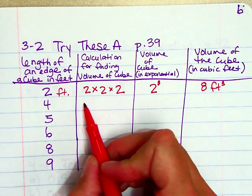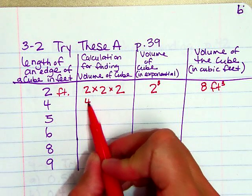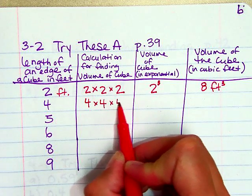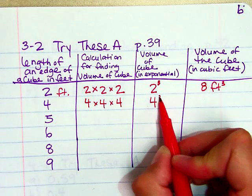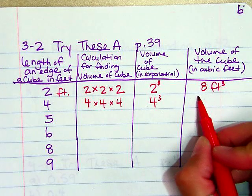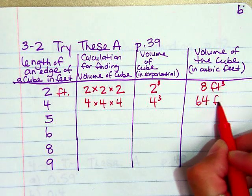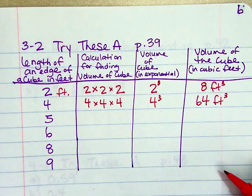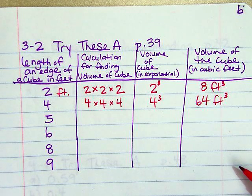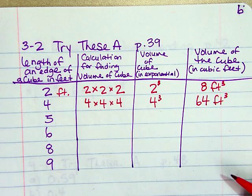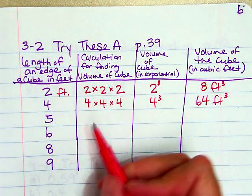So again if I have the edges 4 I have expanded form and then exponential form. And then if I plug that in my calculator which really we should know some perfect cubes. You should have a list of perfect cubes from 1 to 12 in your composition book. So if you don't you want to make sure you have that before test day.